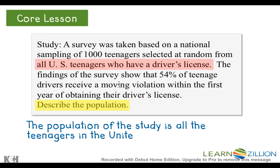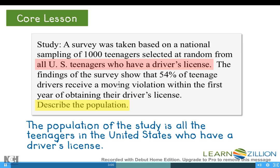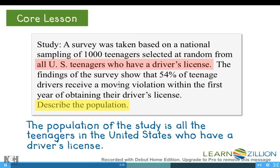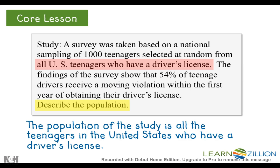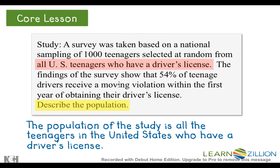We don't say the population is all U.S. teenagers past, present, and future with a driver's license, as we do with dolphins, because society changes quickly and such a generalization wouldn't make sense. The sampling frame could be the entire population if the researcher has access to all records, or just teenagers in the Midwest. A census would be collecting data from every single teenager in the United States who has a driver's license.